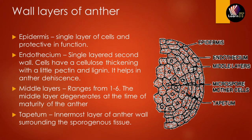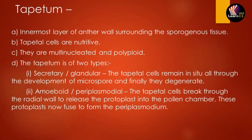The third layer is the middle layer, which ranges from one to three layers. This middle layer degenerates at the time of anther maturity so that pollen grains can be released outside the plant. The last layer is the tapetum — the innermost layer of the anther wall — which surrounds the sporogenous tissue, also known as microspore mother cells, and provides nutrition to the pollen grains.